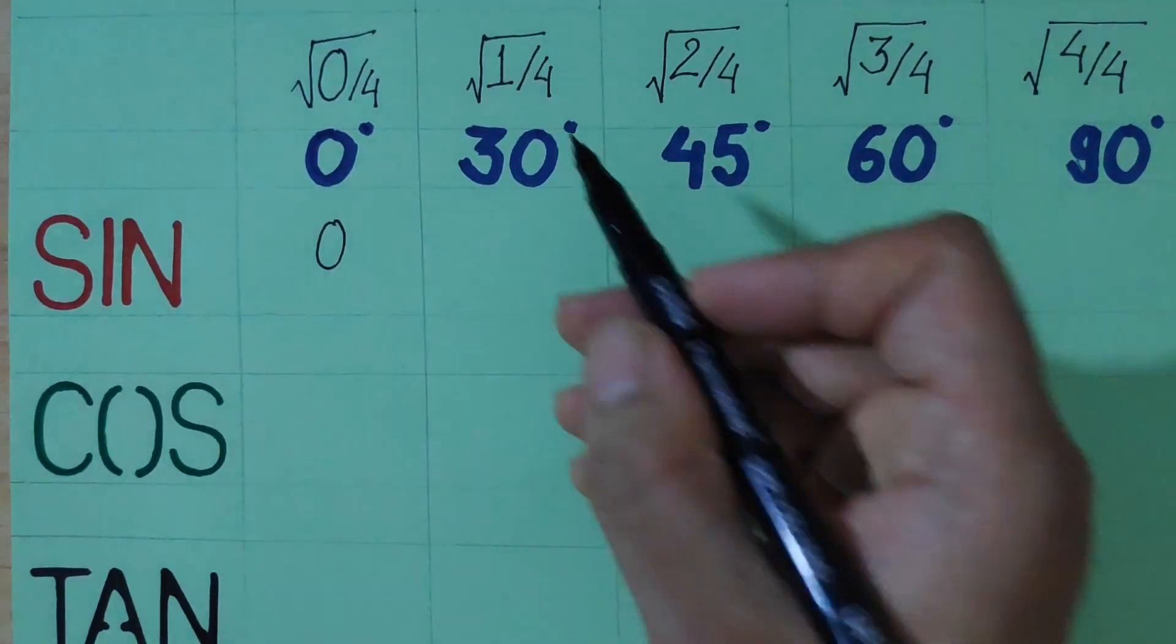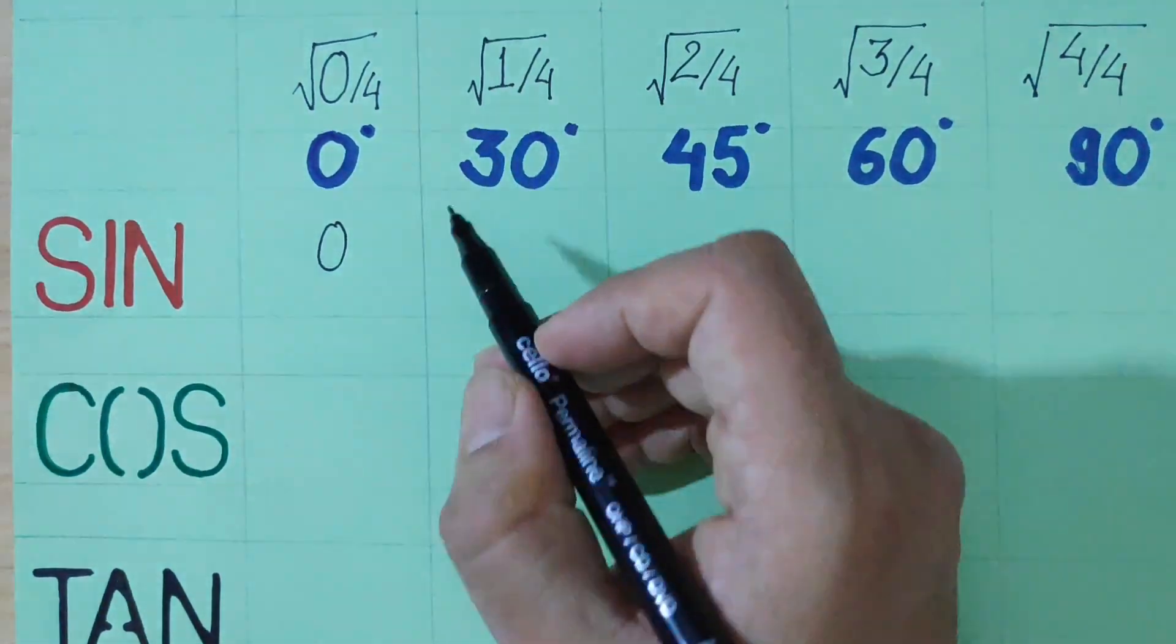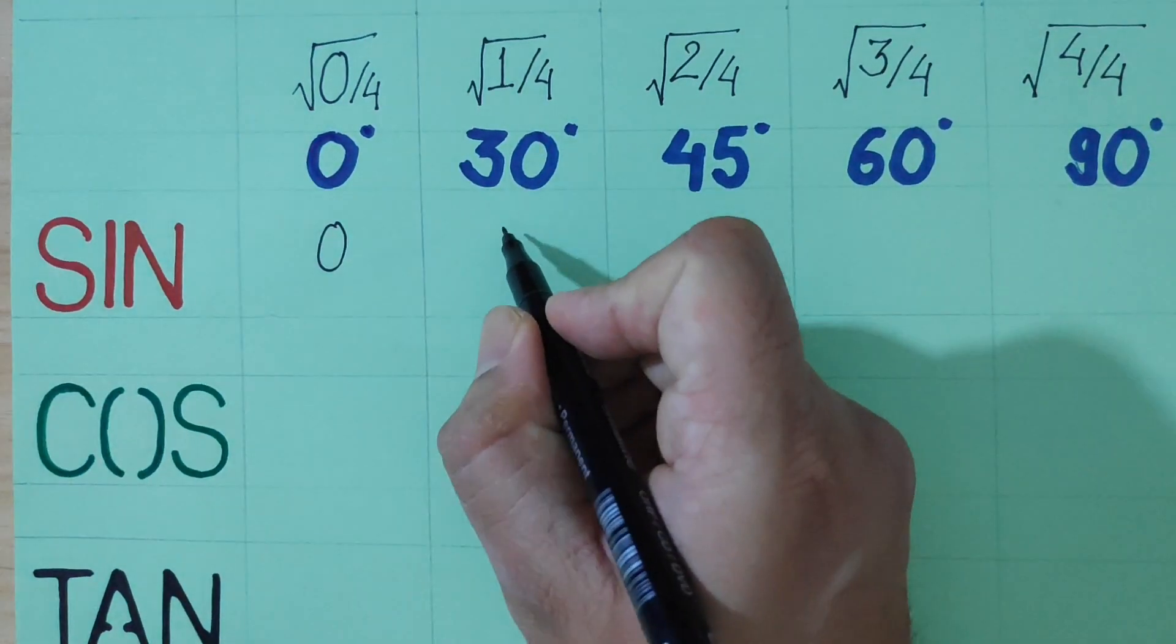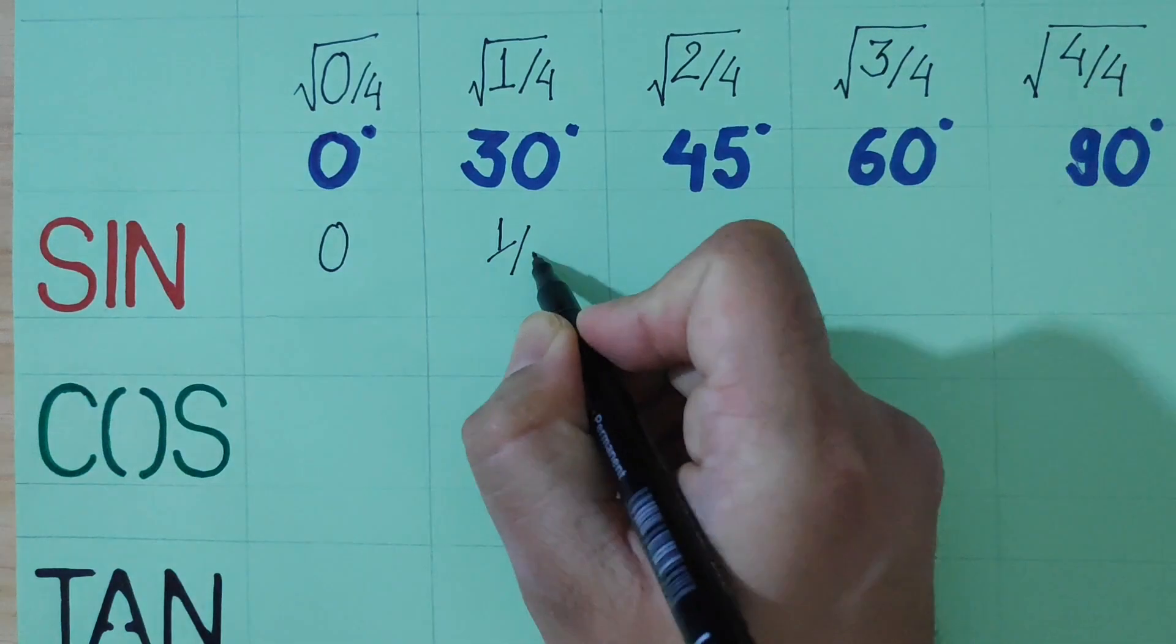Now to simplify, 1 over 4, square root is 1 over 2. So sin 30 is 1 by 2.